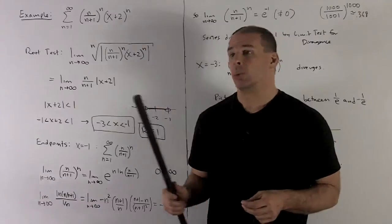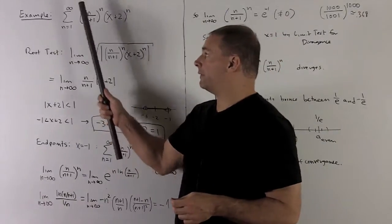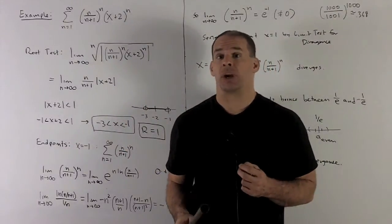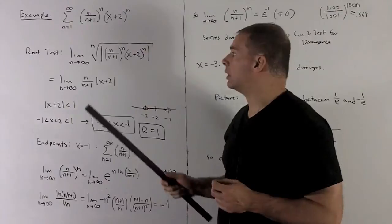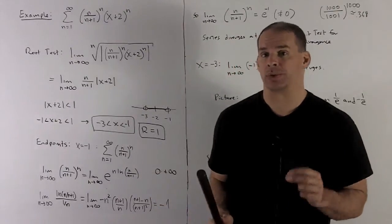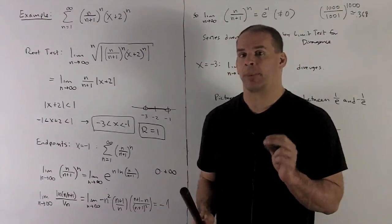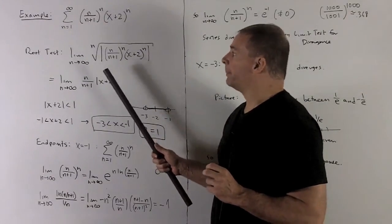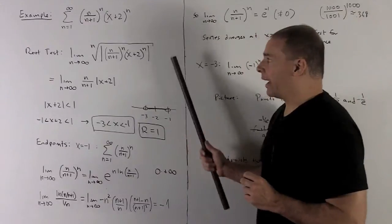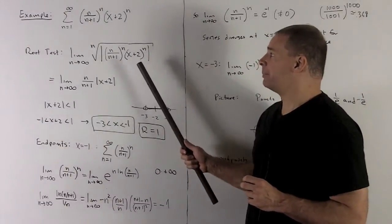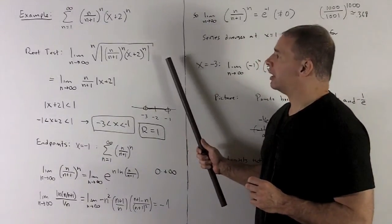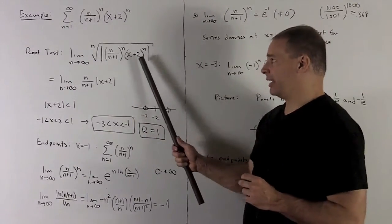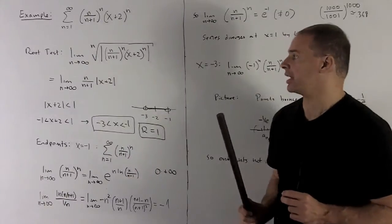Next example — I need a whole board. We have the sum from n=1 to infinity of n over n+1 raised to the nth power, times x+2 raised to the nth power. I'm going to apply the root test, because that's the easiest way to strip off those powers of n. Taking the nth root of the absolute value of (n/(n+1))^n · (x+2)^n just removes the powers of n and leaves |x+2| inside absolute value signs.